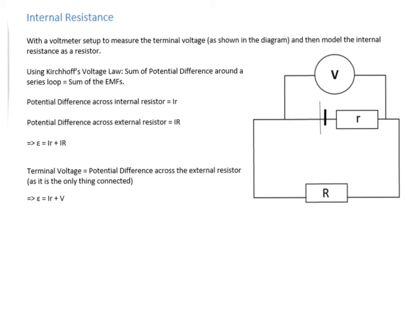To introduce terminal voltage, the voltage you'll get on the terminals will be the EMF minus the potential drop across your internal resistor. What you can see here is just a rearranged version. Usually equations are rearranged so you don't have minuses in them, so by convention you'll see this form.